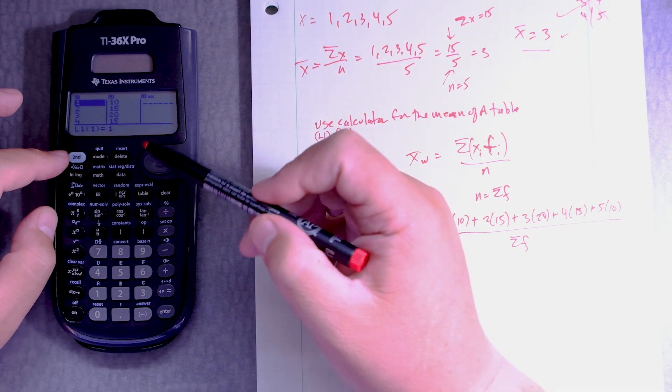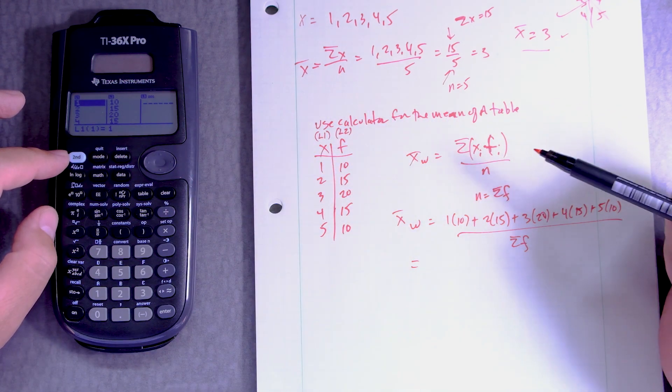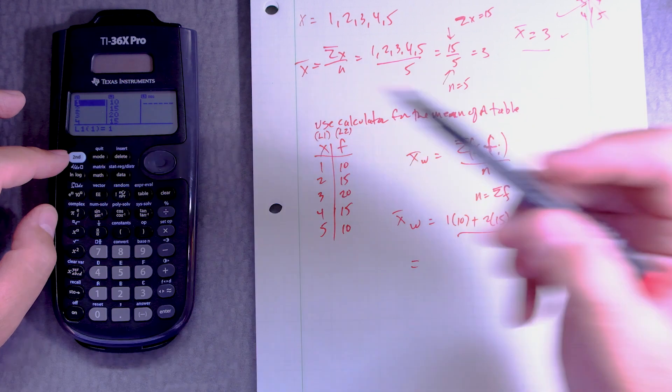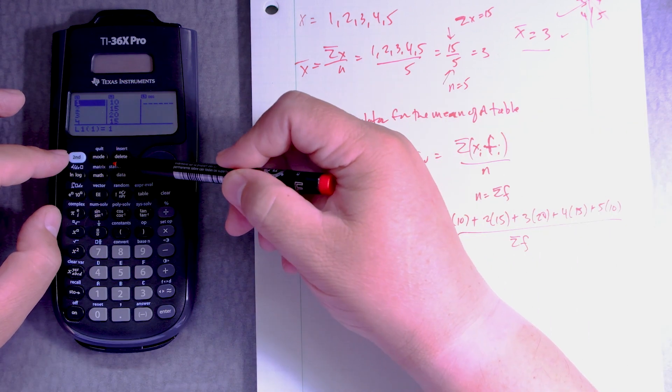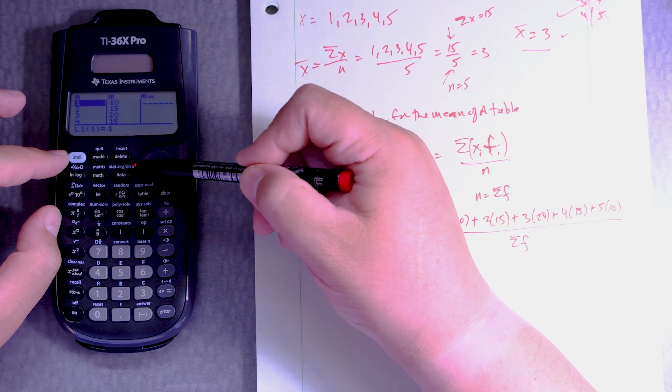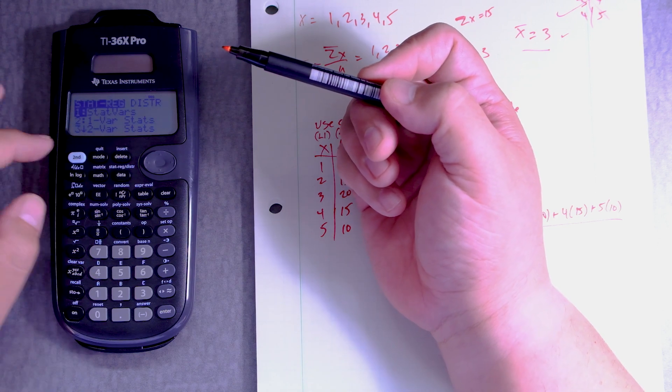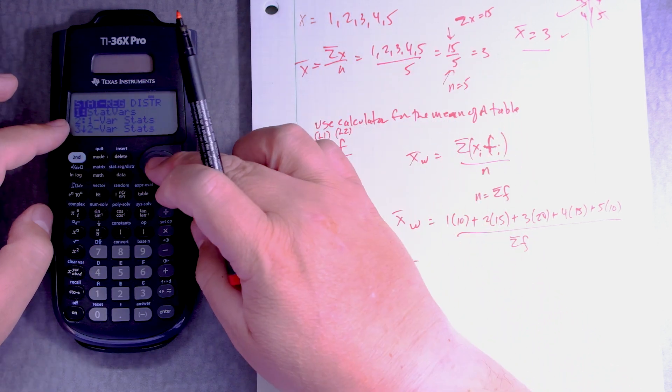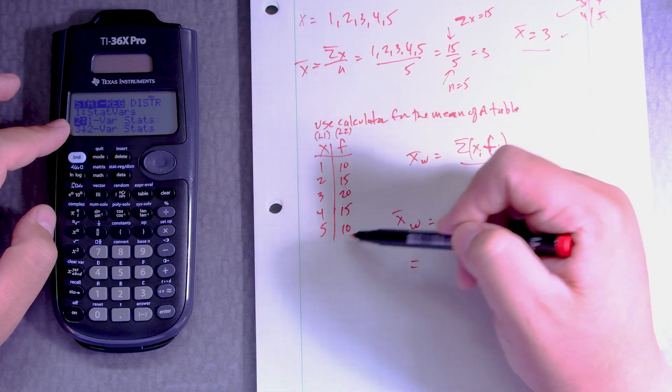So what I want is I want to go into what they call one variable statistics, and to do that we got to click on stat distribution. This is light blue. So second data and we're going to do one variable statistics because this is still one variable.